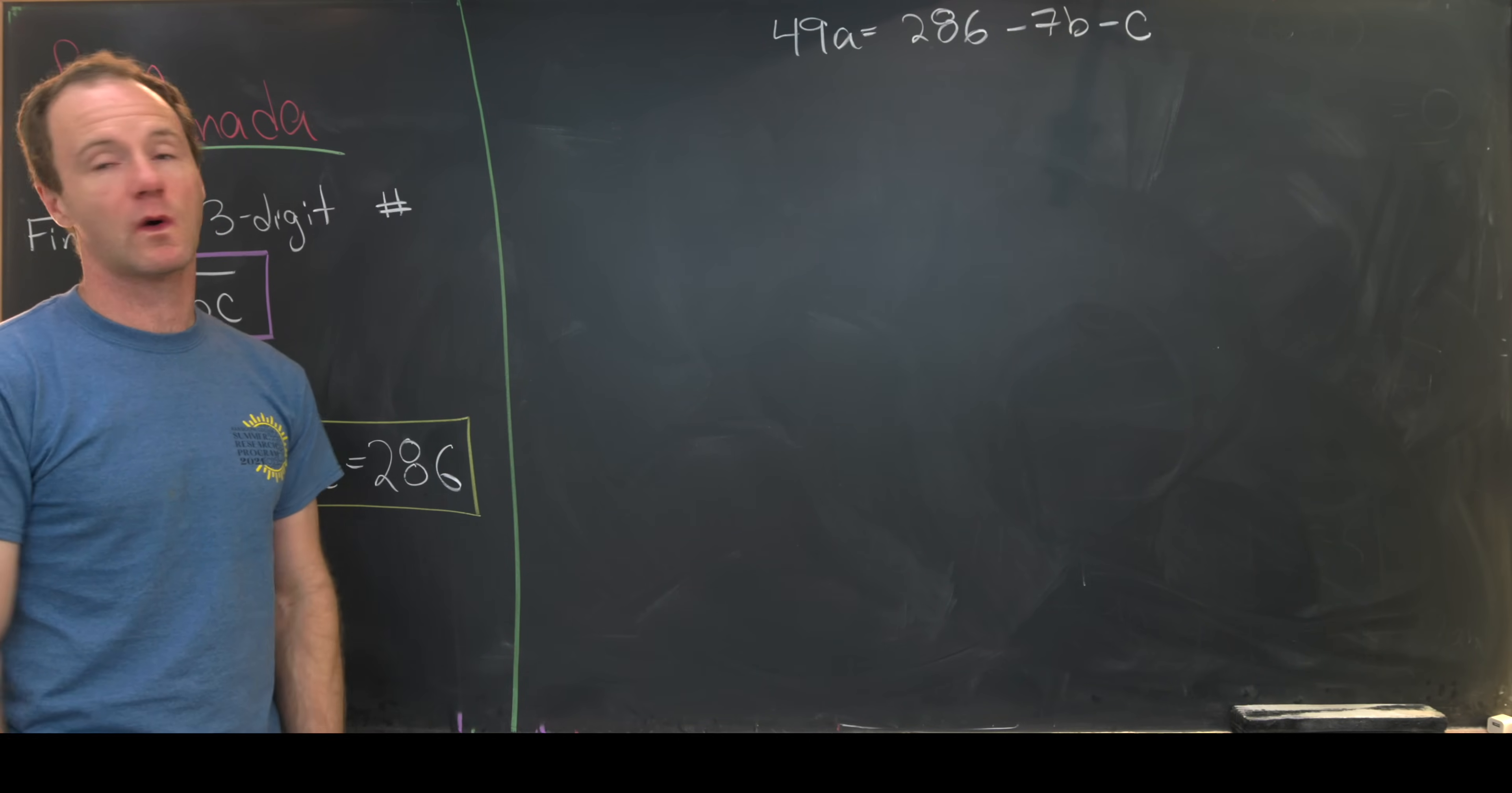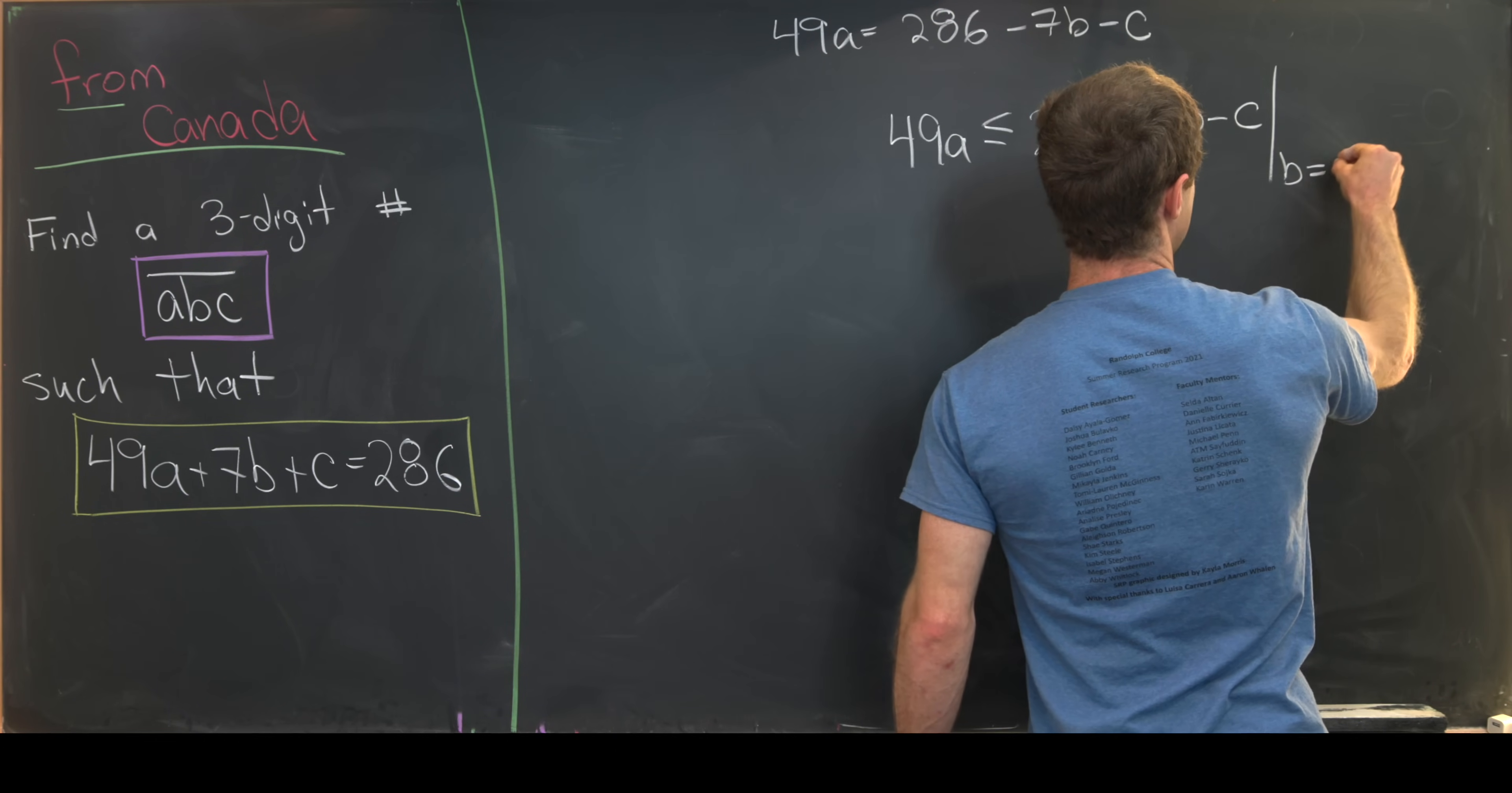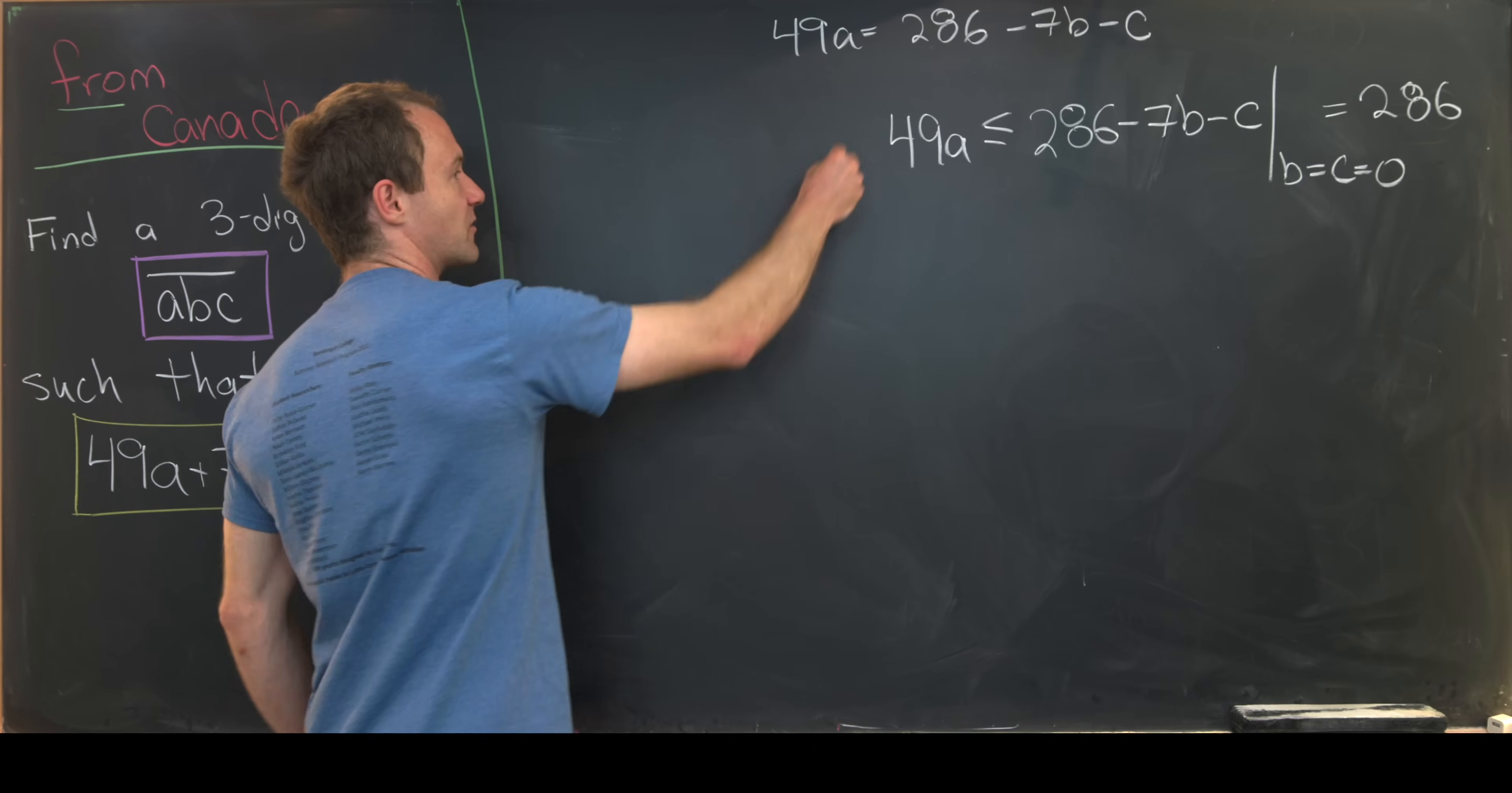But now we can use this expression to generate an inequality for 49A. So I'm just going to rewrite this as 49A is less than or equal to 286 minus 7B minus C, where we evaluate this at B equals C equals 0. So that'll most definitely generate something that is bigger than or equal to. Notice that gives us 286.